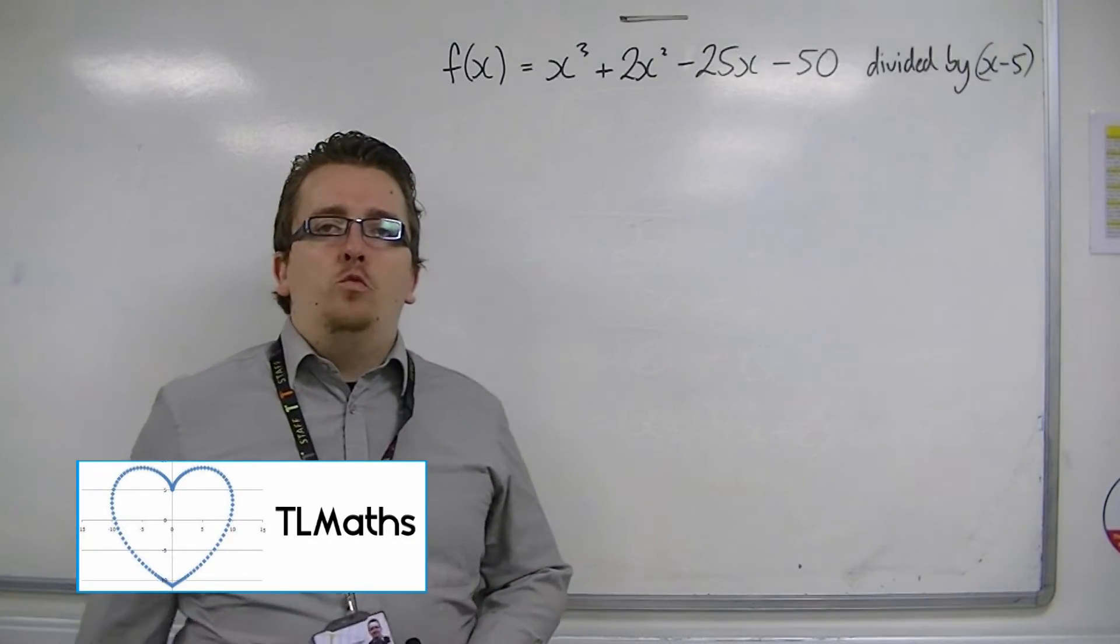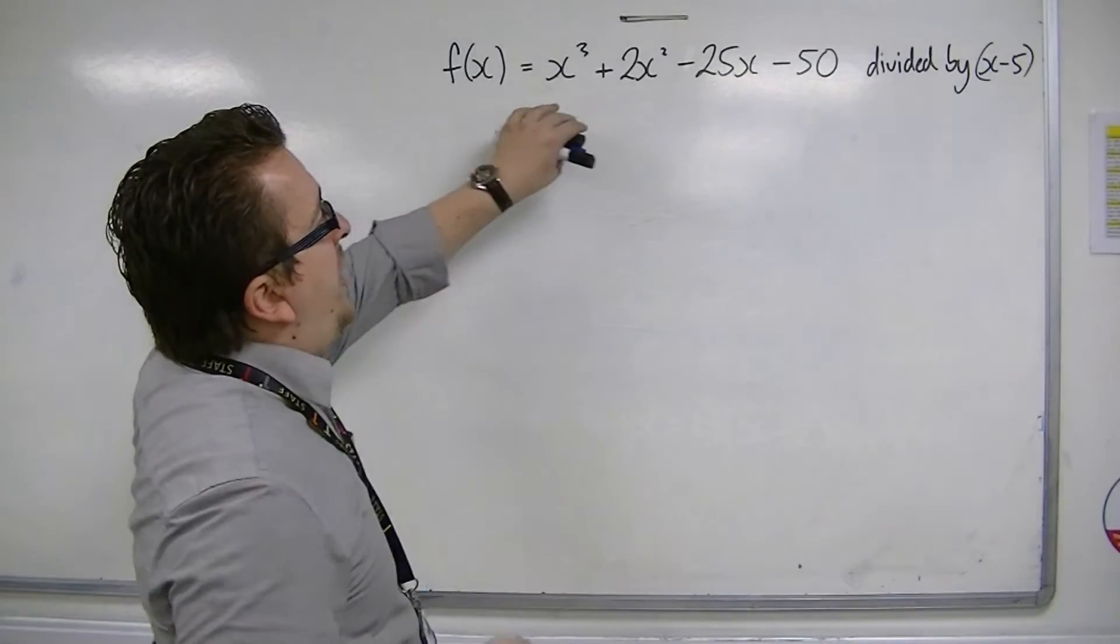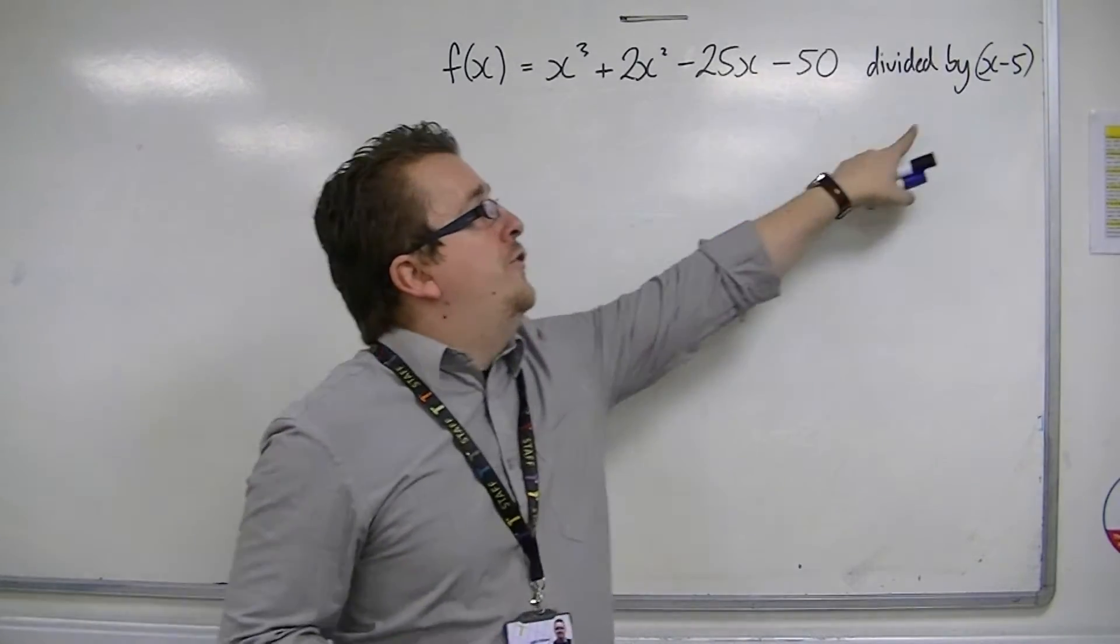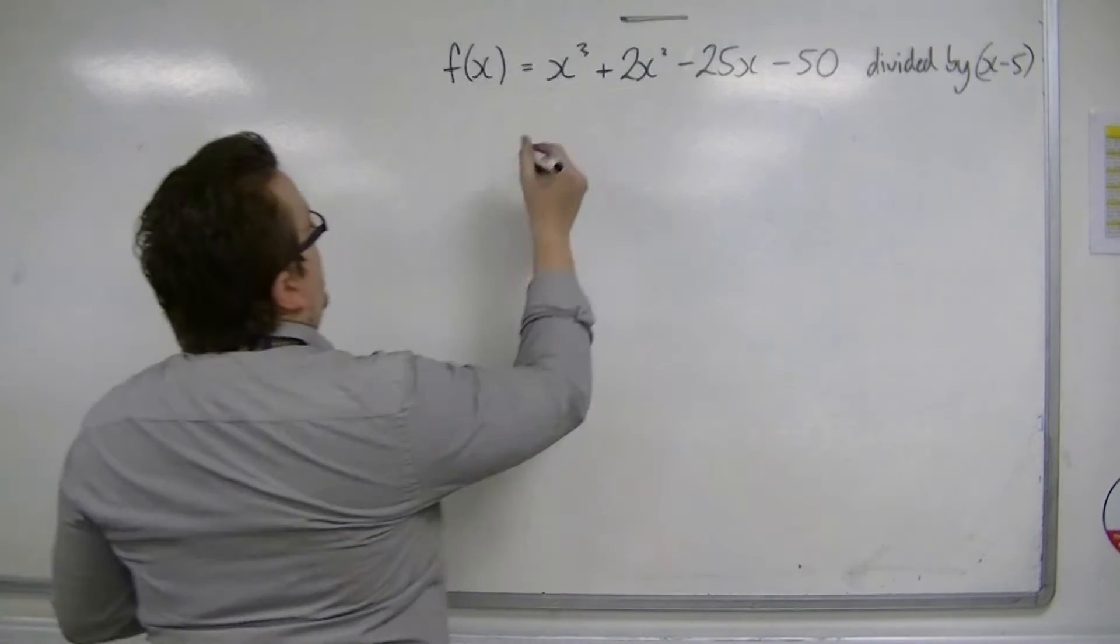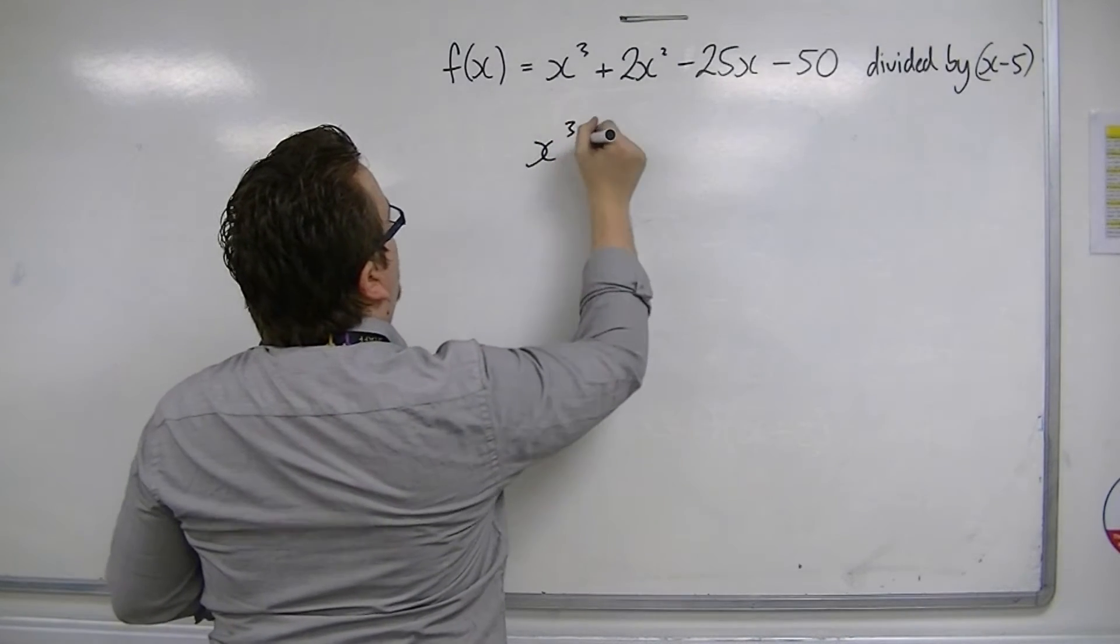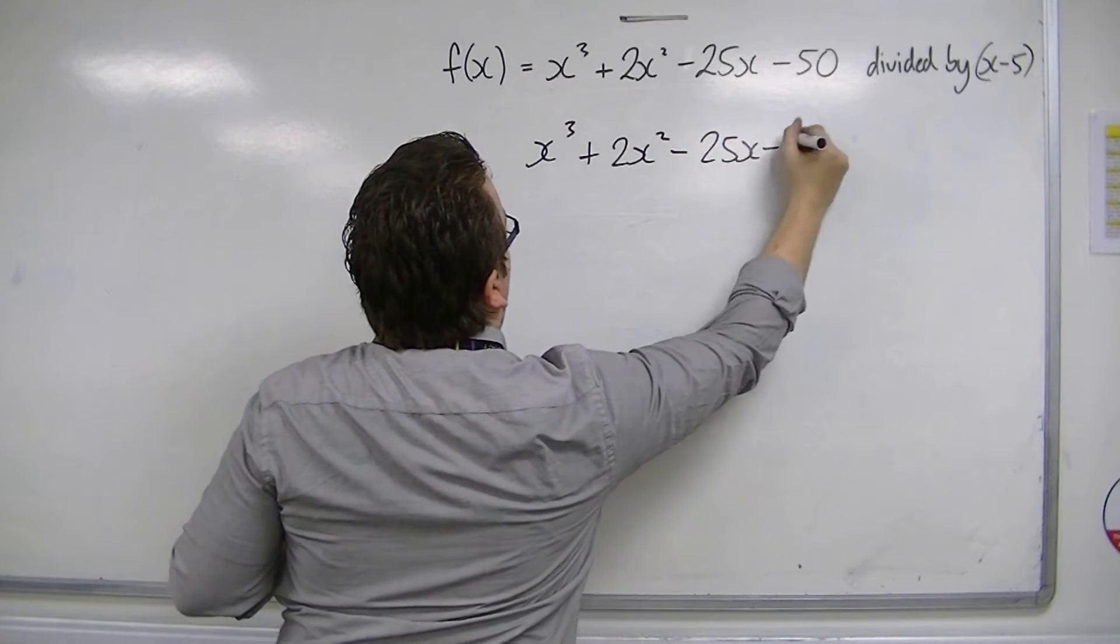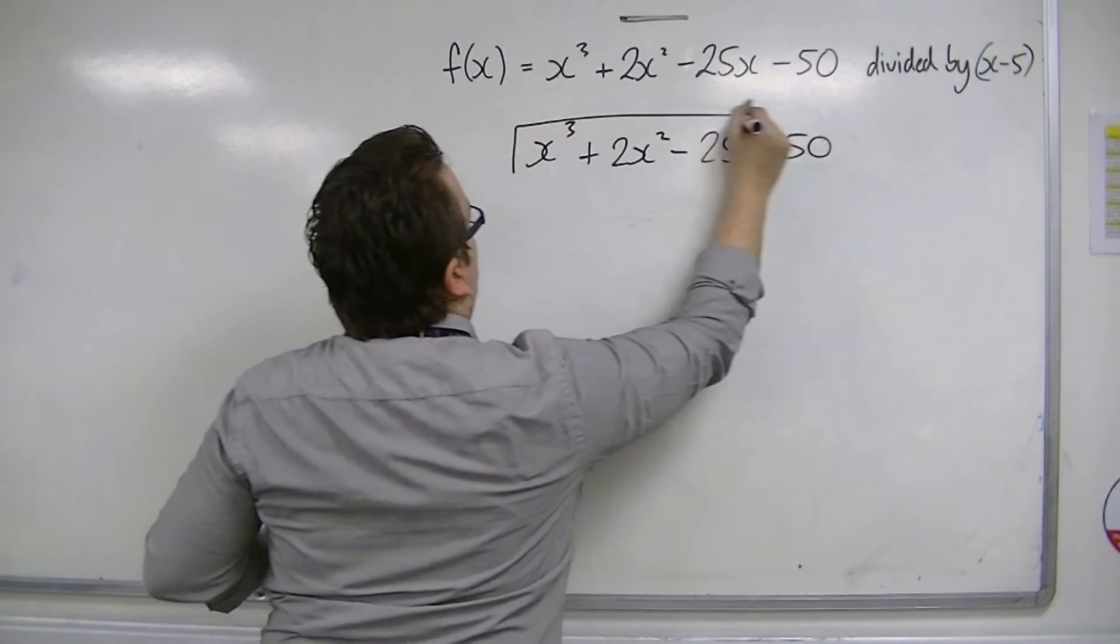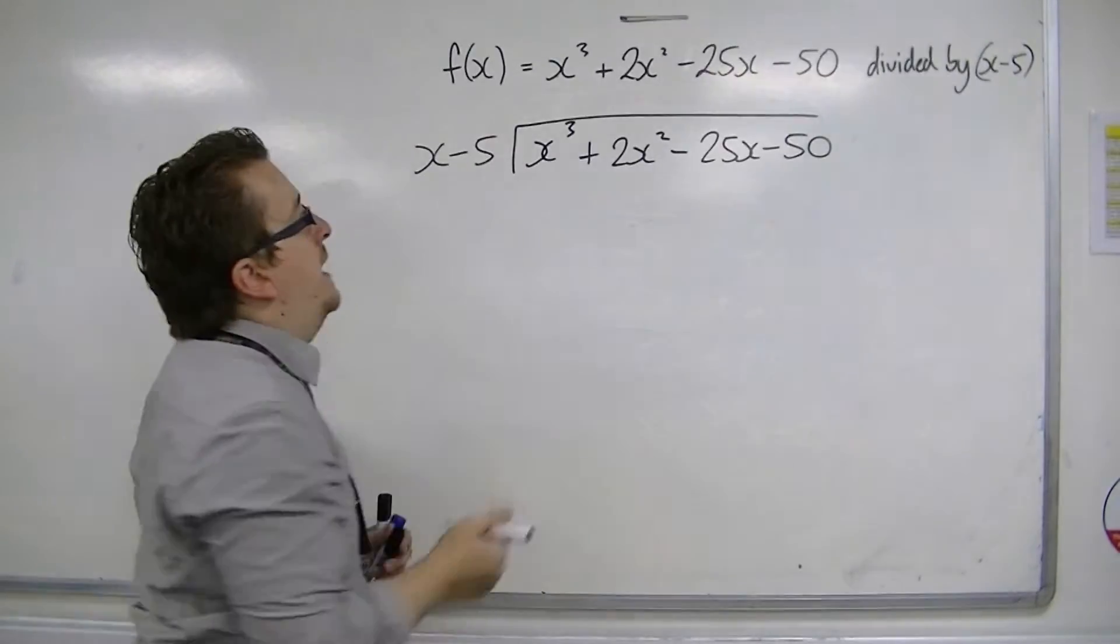Okay, in this video we're going to look at a polynomial division. In this case we're looking at this cubic, and we're going to divide it by x minus 5. So we set it up much like you would a normal division. Okay, so we've got the polynomial divided by x minus 5.